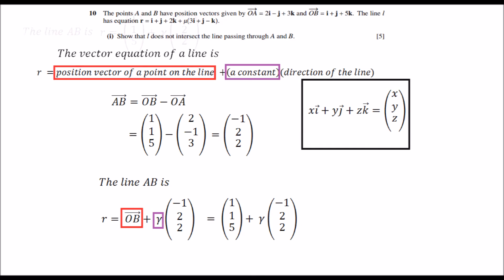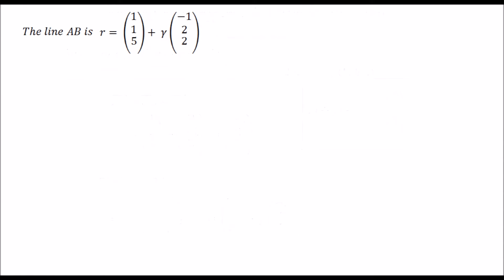Now let's move on. The vector equation of line AB we have calculated and the question gives us the vector equation of the line L. To show that the lines, to check whether the lines intersect or not, all we need to do is to equate these two equations. That's it. So equating these two equations. I'll tell you why.